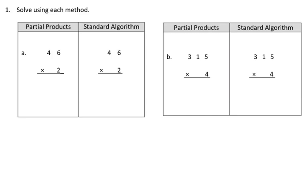For the partial products, we have 46 times 2, so that would be 2 times 6 ones, and 2 times 4 tens. So for partial products, it would be 12, and 4 tens is 80, and we add those together to get 92.